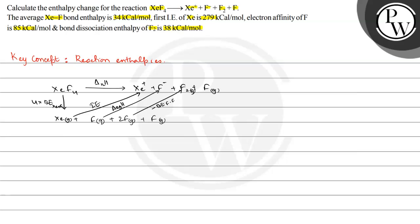So let's find out the enthalpy change of reaction. The enthalpy change of reaction is equal to 4 multiplied by bond energy of XeF plus ionization enthalpy plus electron gain enthalpy minus bond enthalpy of F2. And that's it. So we have to put the values.